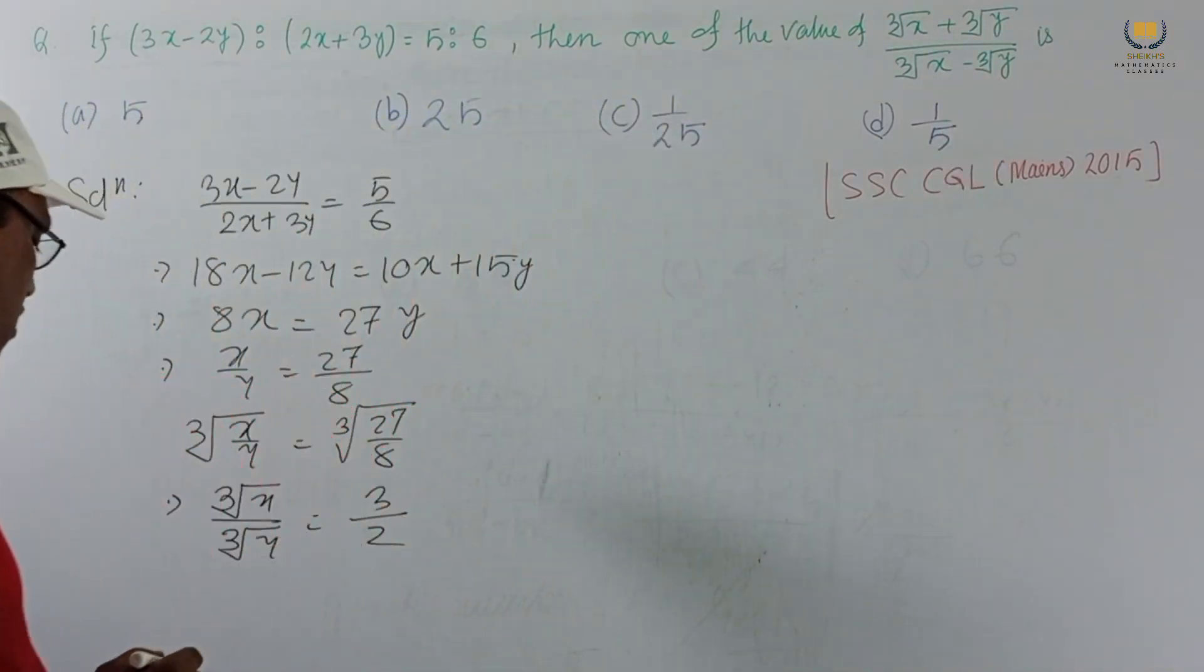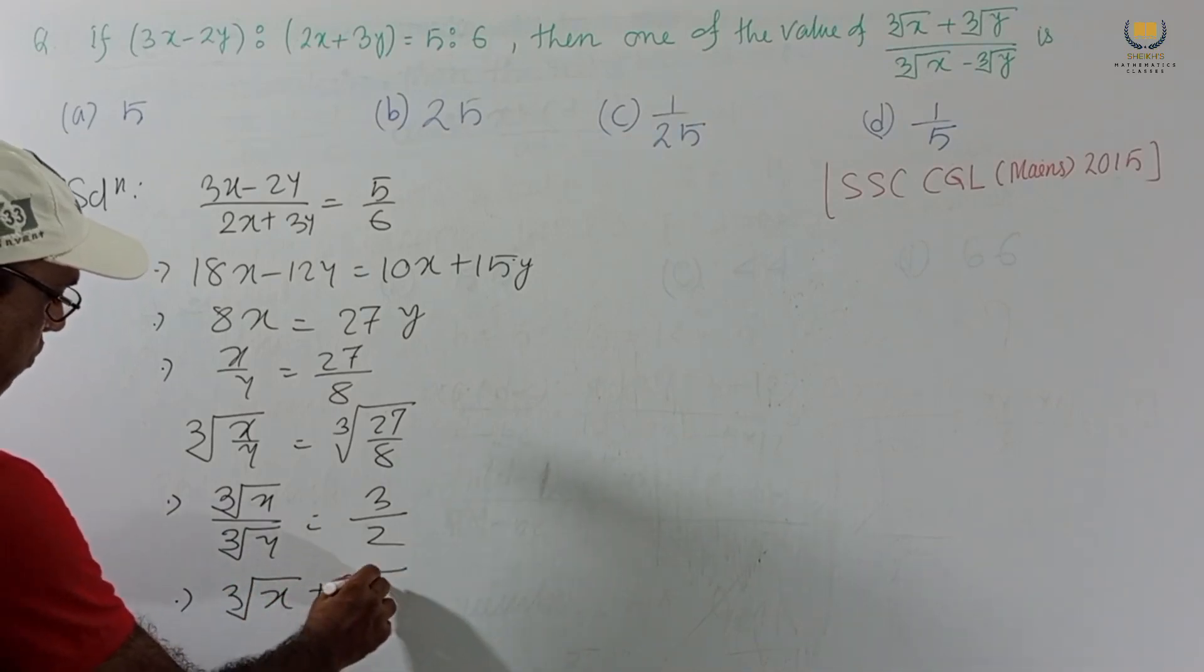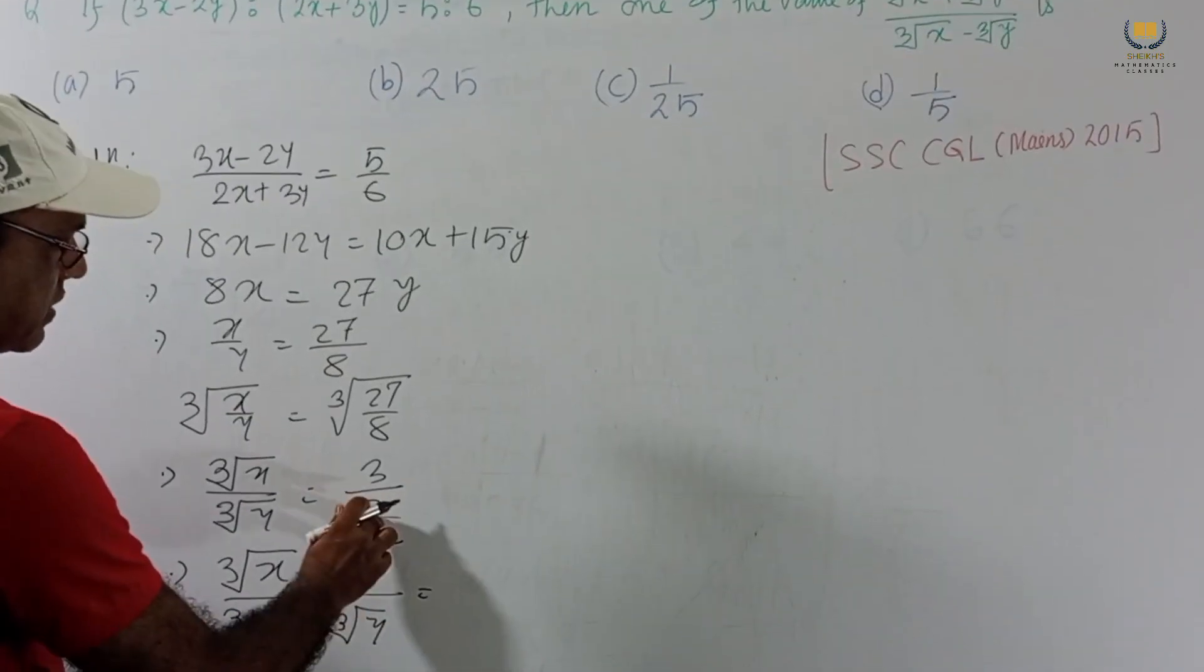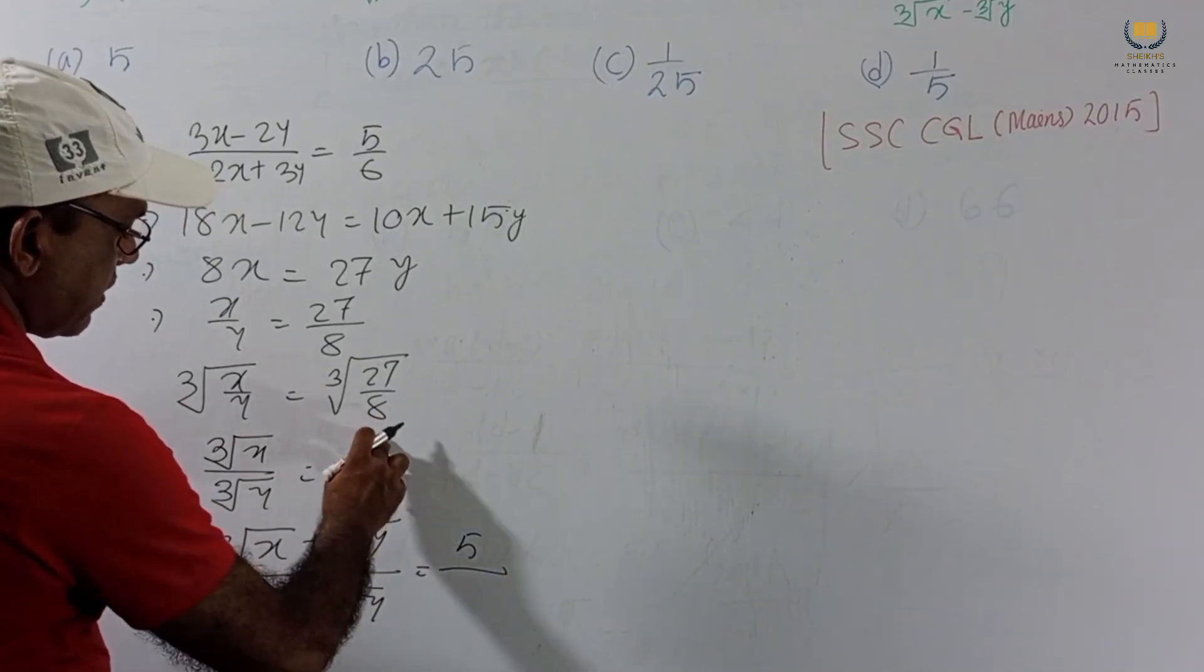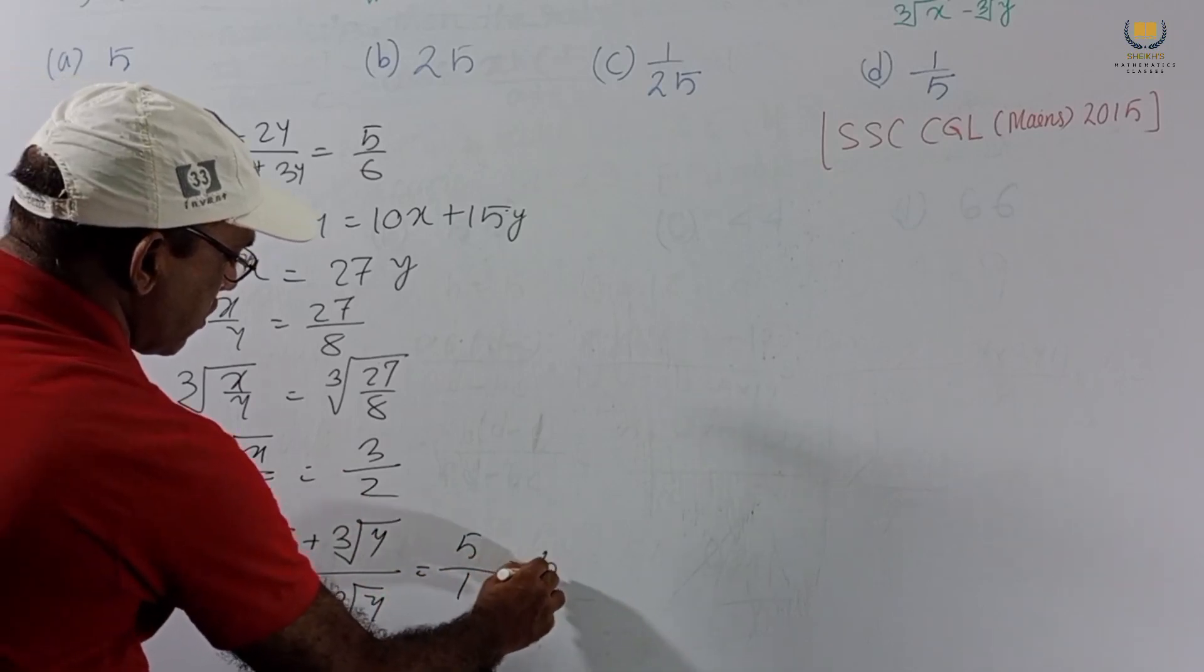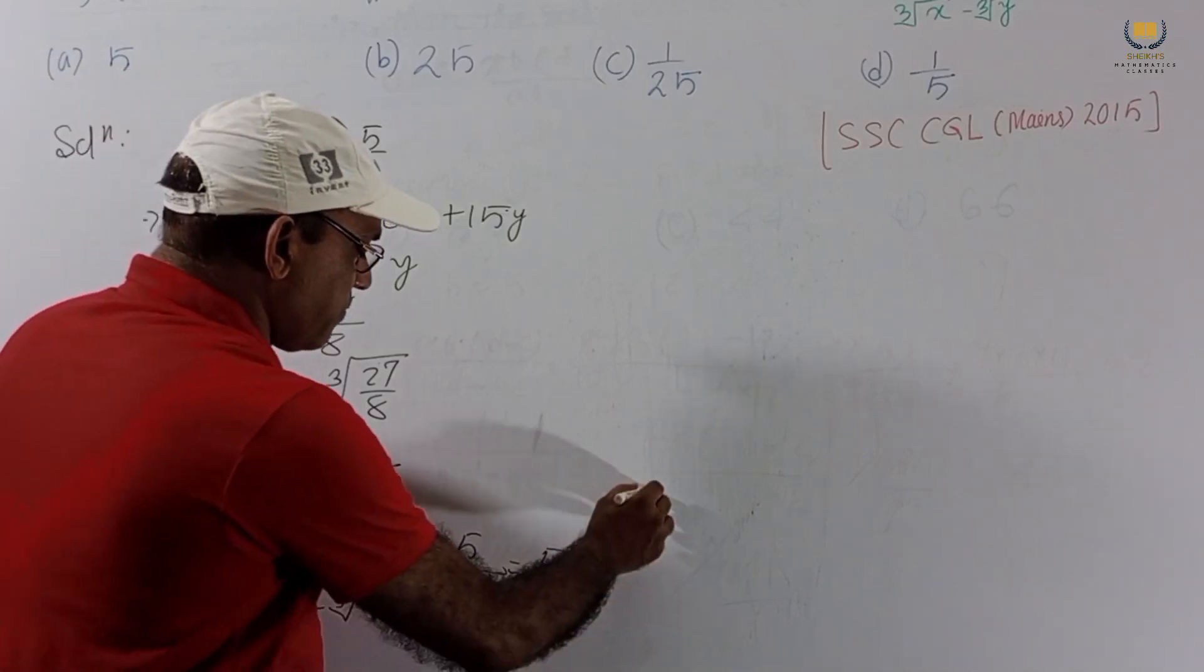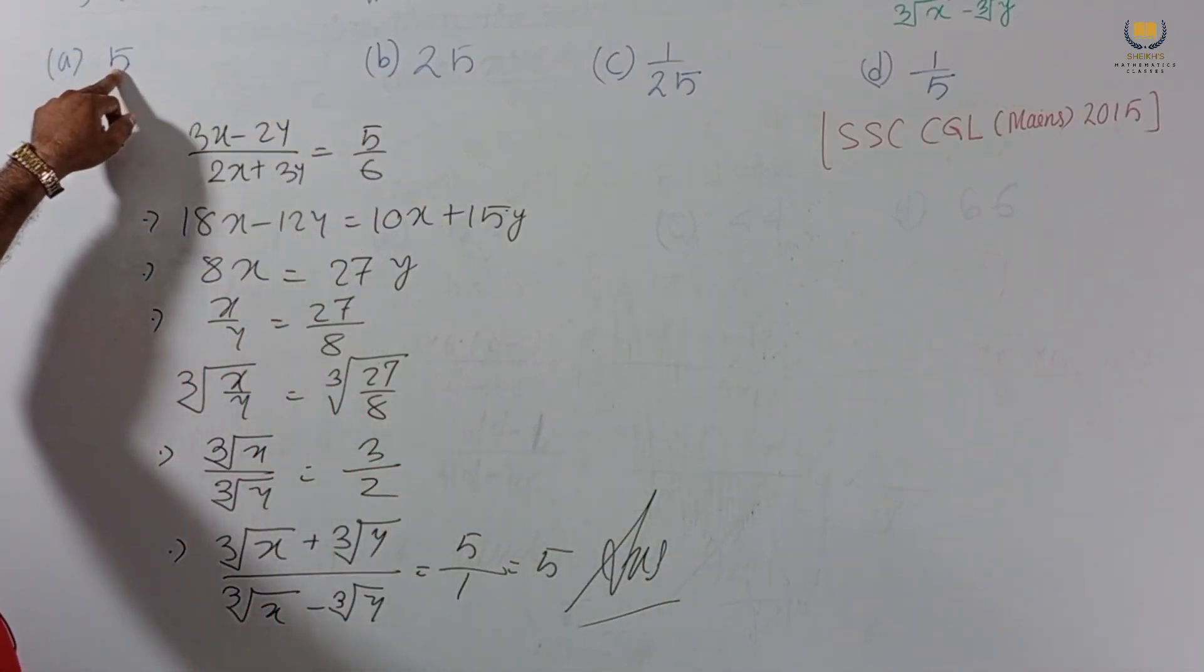If we use componendo and dividendo we get (cube root of x + cube root of y) divided by (cube root of x - cube root of y). This is 2 plus 3, this is 5. 3 minus 2, this is 1. This will be 5. So answer is 5. This is the correct option. Option A is the correct option. Very nice solution.